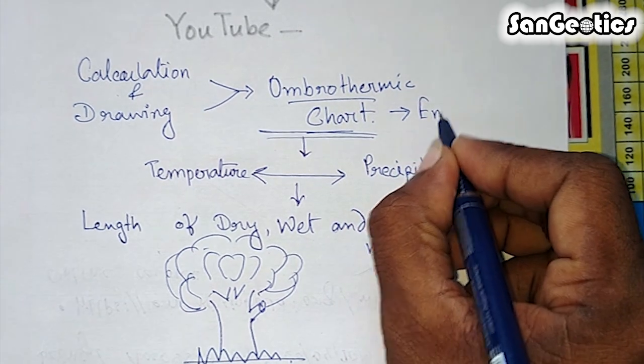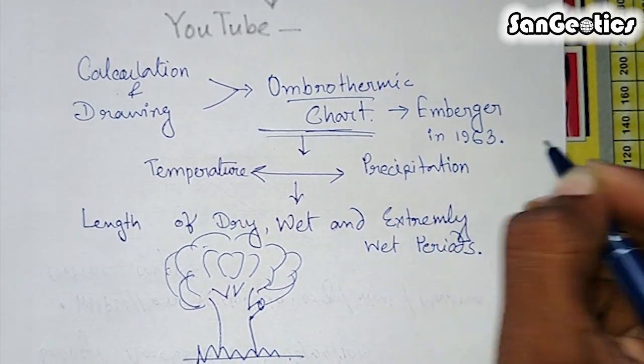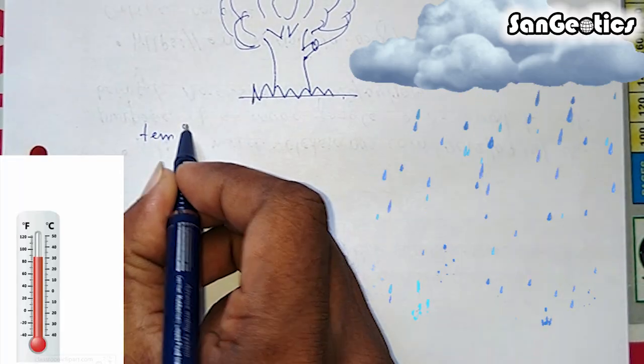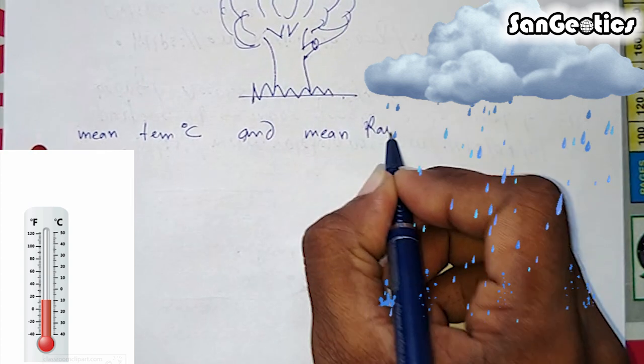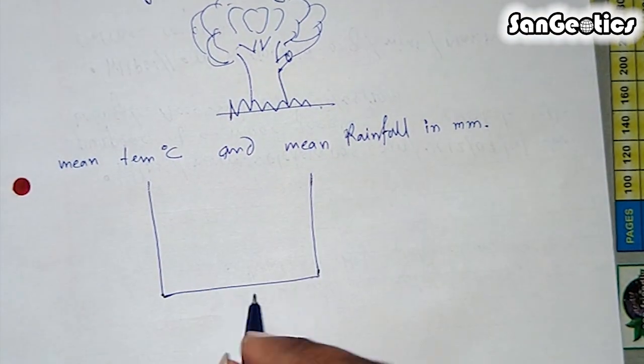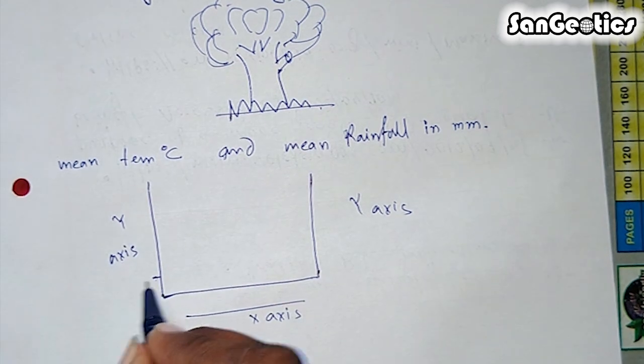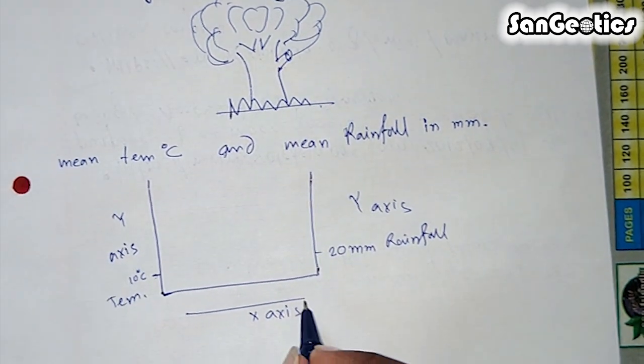This technique was postulated by M. Burger in 1963. This method plots mean monthly temperature in degree Celsius and rainfall in millimeters on the same axis, but with the scale of the precipitation data at twice that of temperature data.